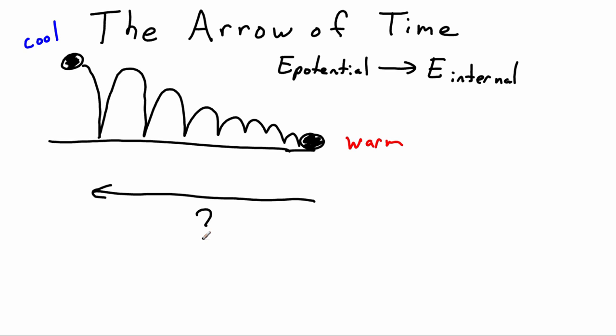Can we do this process? Would it violate conservation of energy? No — we'd just be turning internal energy into potential energy. So there's nothing about conservation of energy that would forbid this from happening. And yet, if you did see a warm tennis ball at rest on a table start to bounce, you would think that was very odd. It would seem like you were looking at a movie being run backwards. We actually don't see this happen.